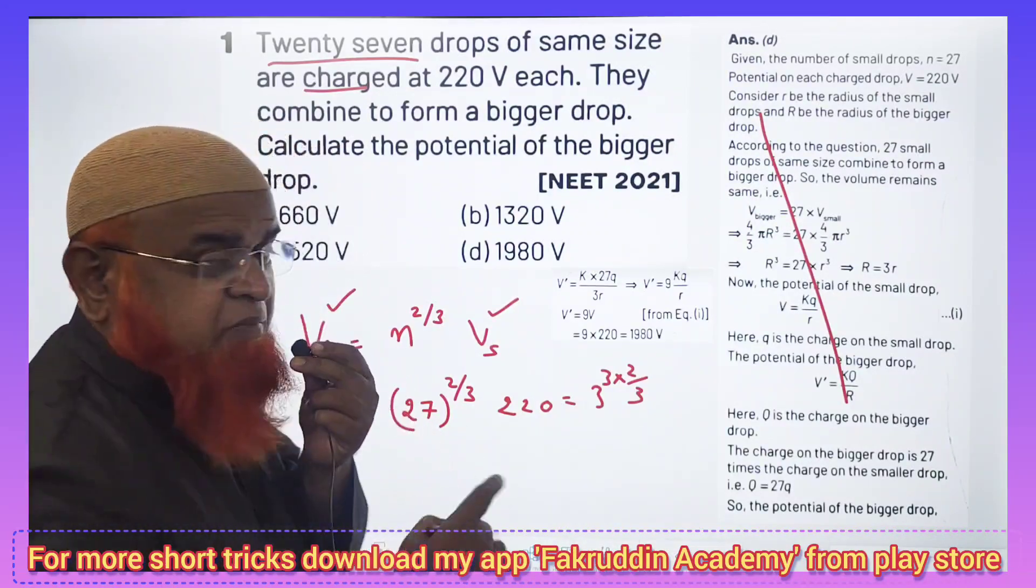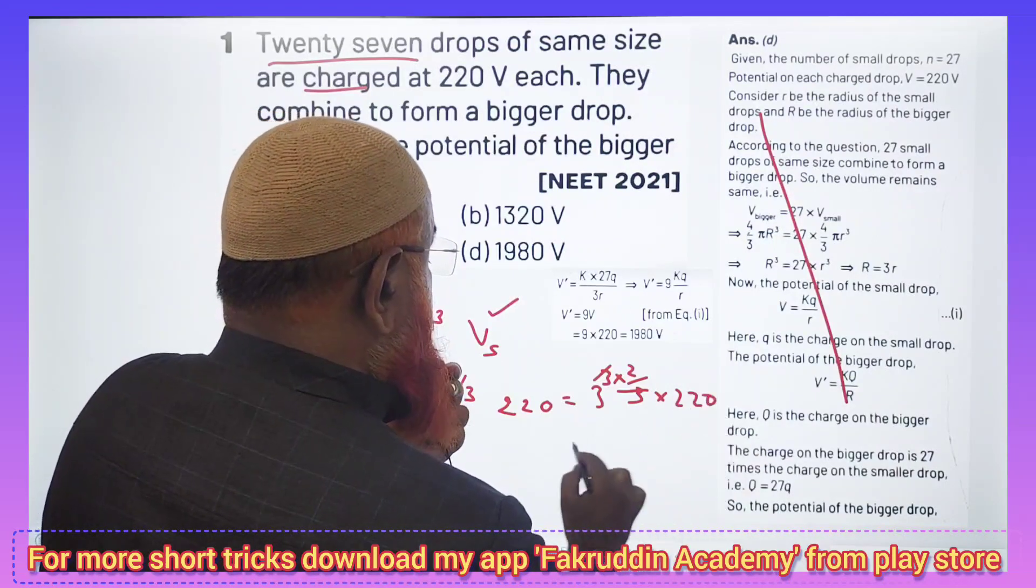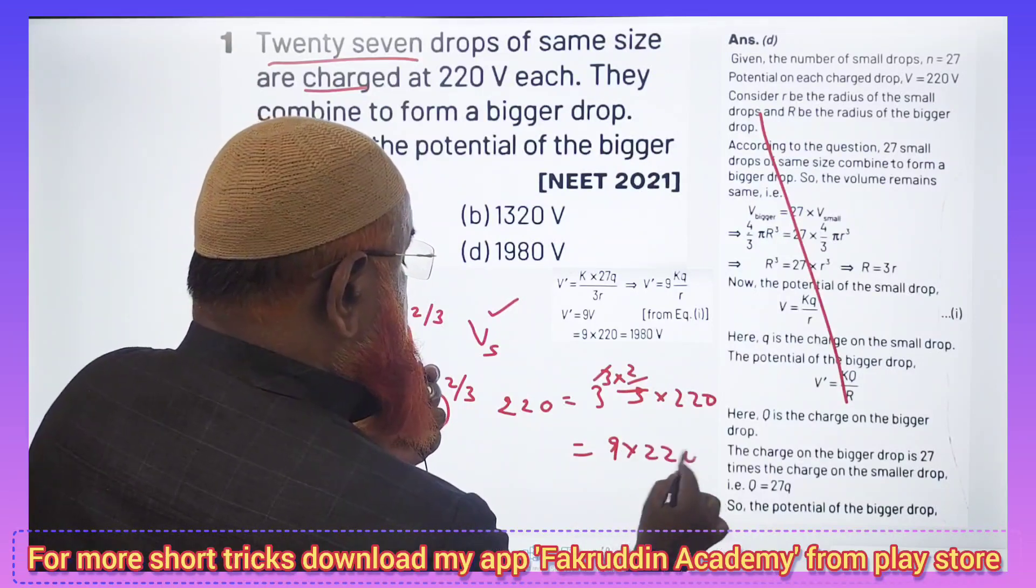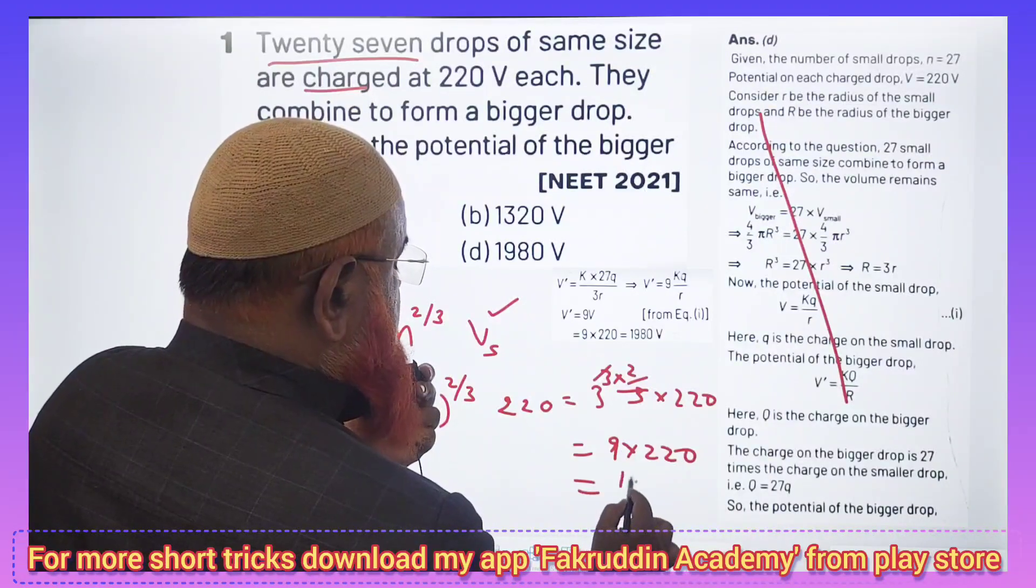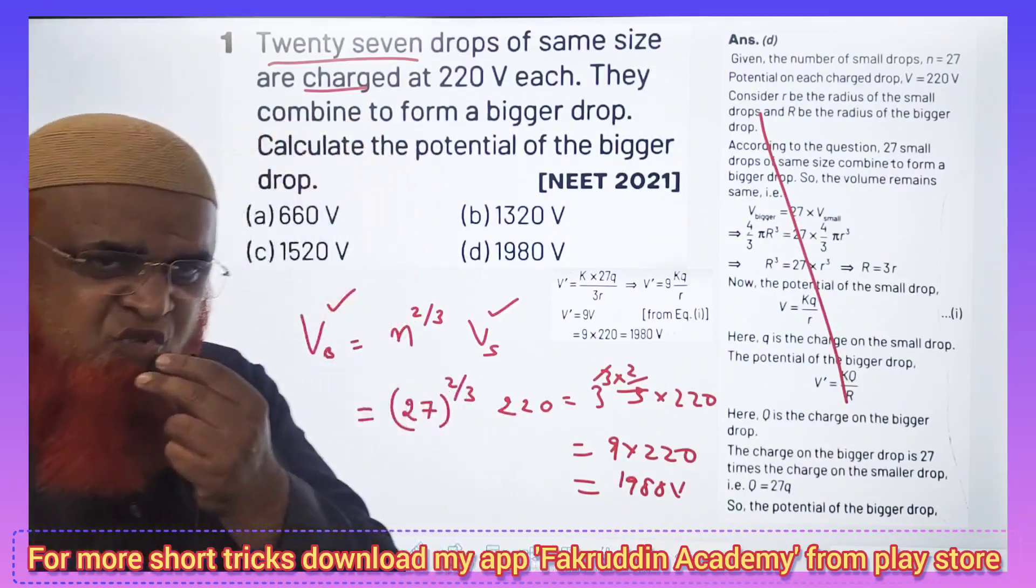So 3 gets cancelled here. Into 220. So what is left? 3 squared is 9. 9 into 220, your answer is ready - that is 1980 volts. That is it. Hope you enjoyed it, thank you.